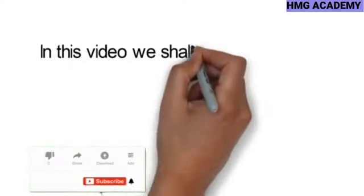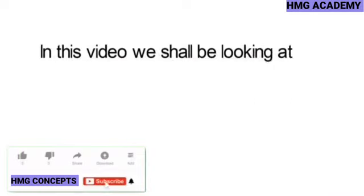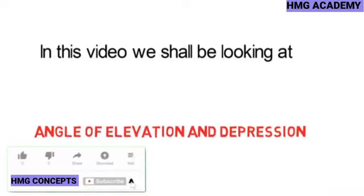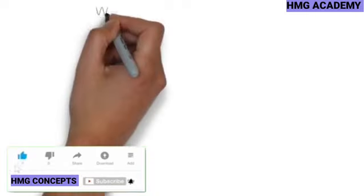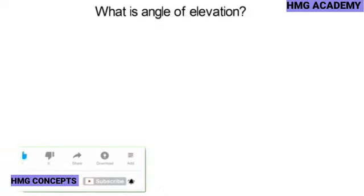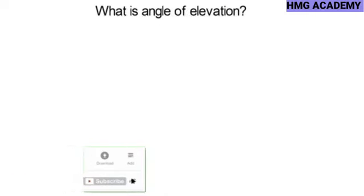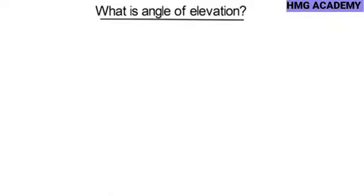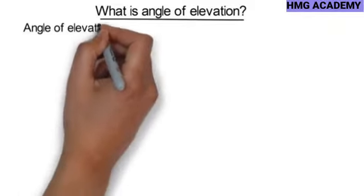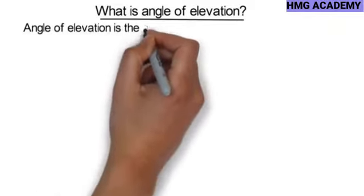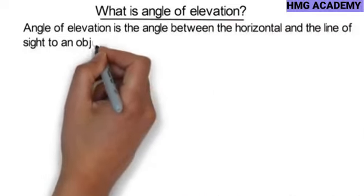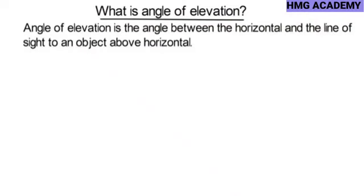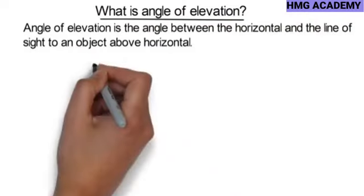In this video we shall be looking at angles of elevation and depression. Angle of elevation is the angle between the horizontal and the line of sight to an object above the horizontal.